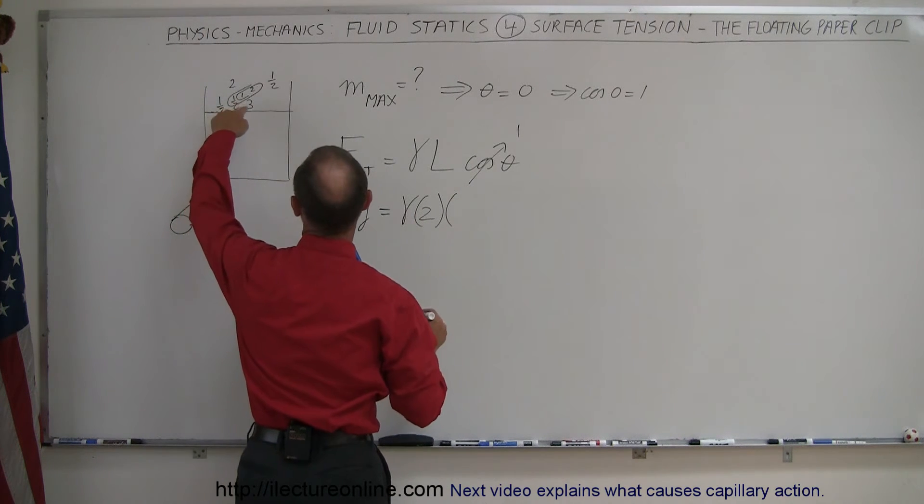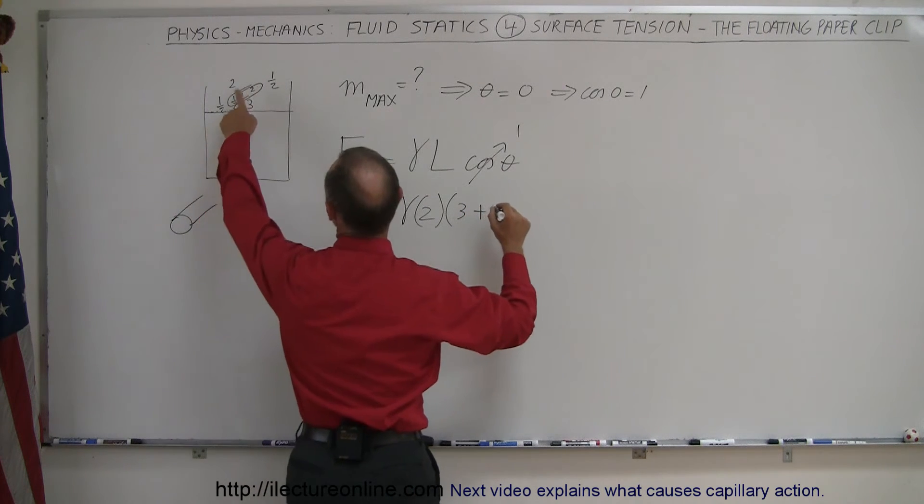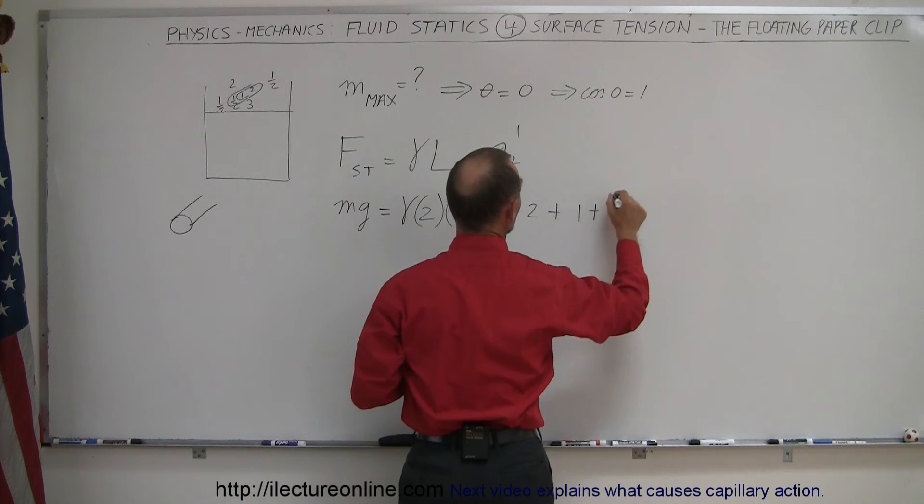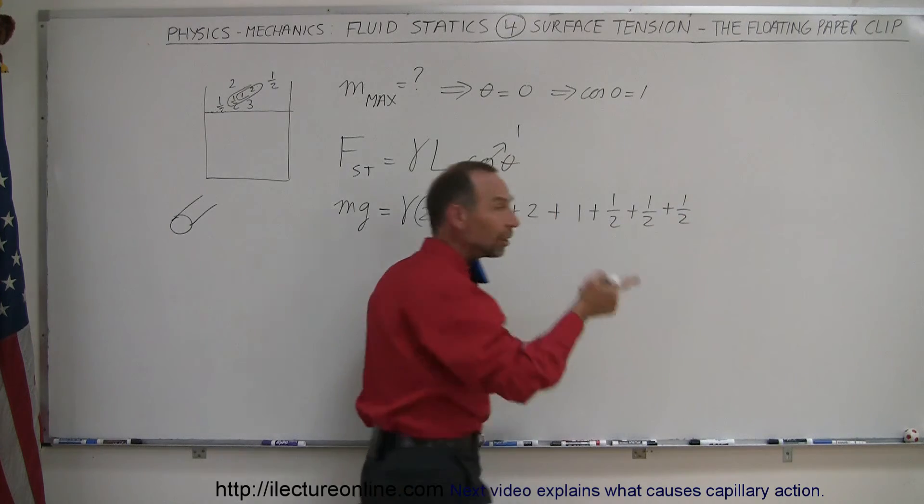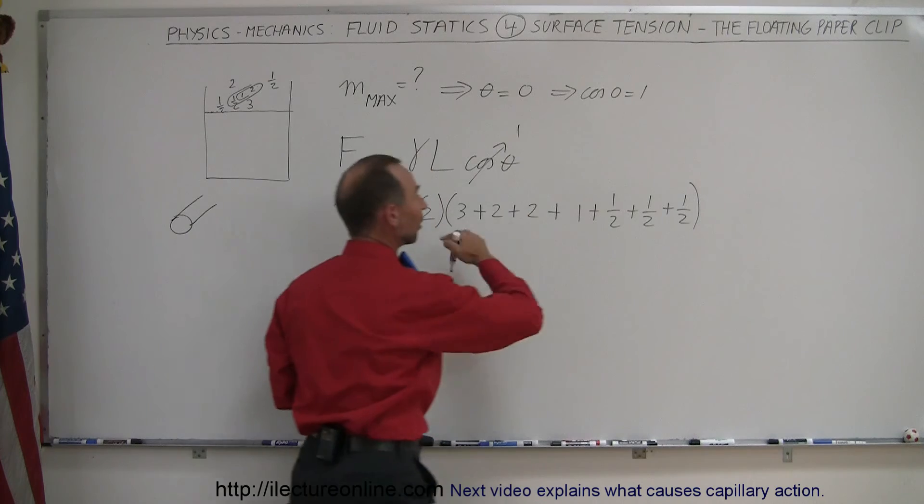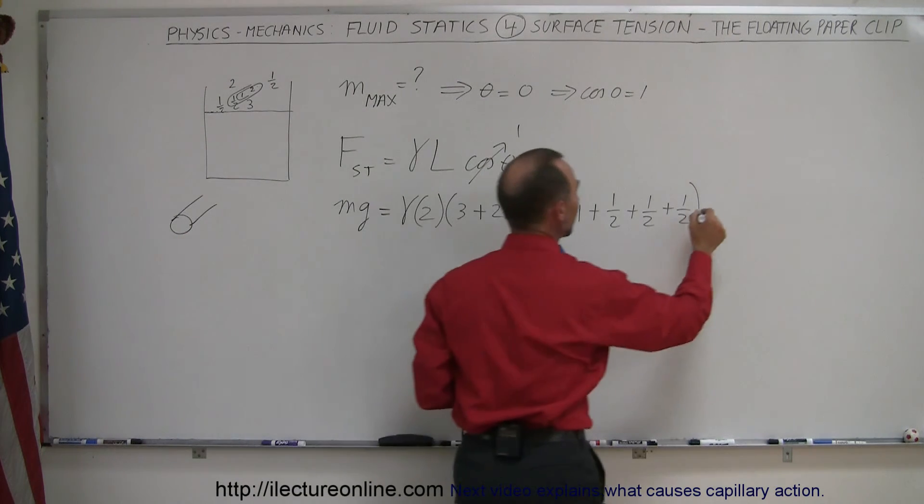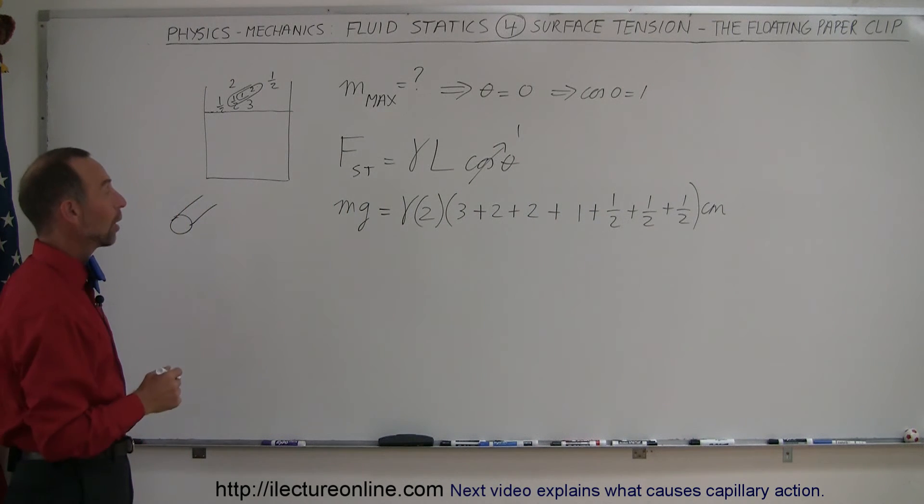So that's going to be two times the total length in centimeters. So we have, let's add them all up, so we have three centimeters plus two centimeters, plus two centimeters, plus one centimeter, and then plus the half, half, and half centimeters for the little curve on all the sides, and since we have taken into account both sides, we have to multiply all that times two, and all that would be in centimeters. All right, so it gives us total length that makes contact with the water.